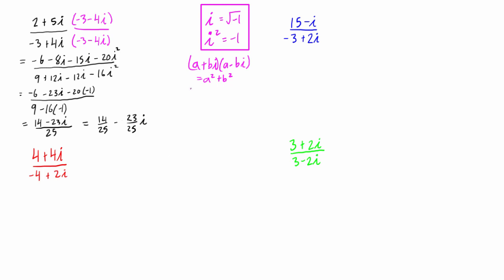This will work every time for complex number division — we always want to multiply the top and the bottom by the conjugate of the bottom. For the next example, we multiply top and bottom by the conjugate of the bottom, so we have negative three minus two i multiplied to the top and negative three minus two i multiplied to the bottom.